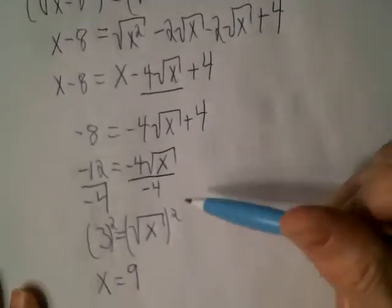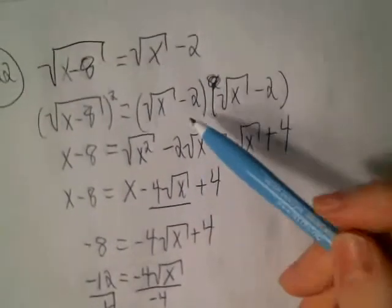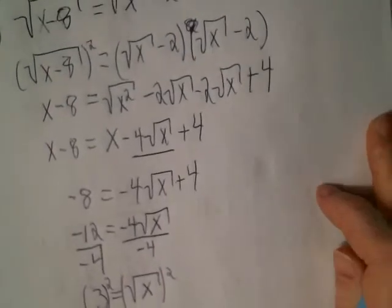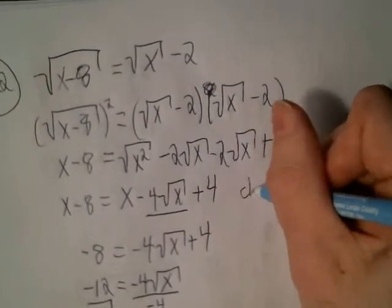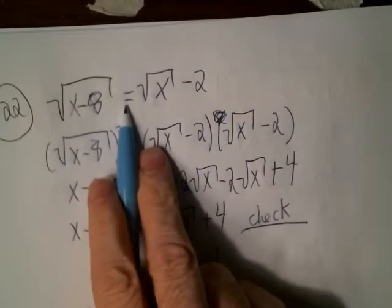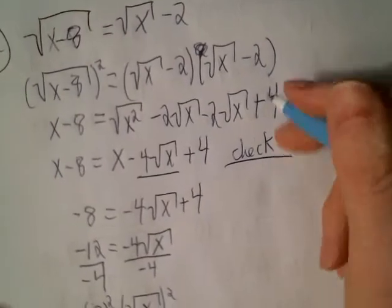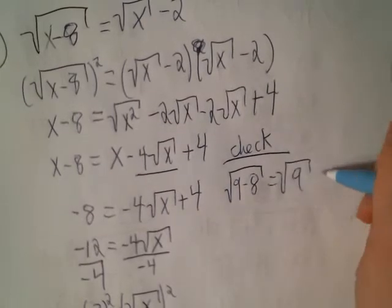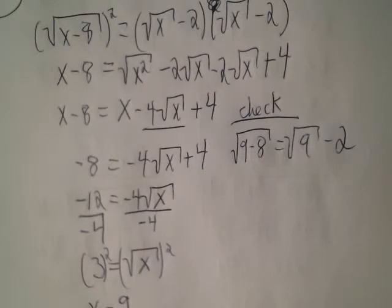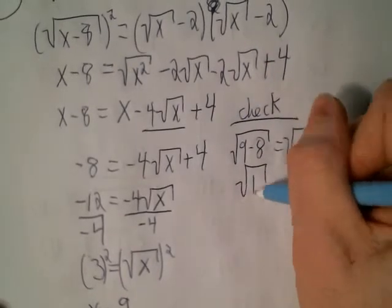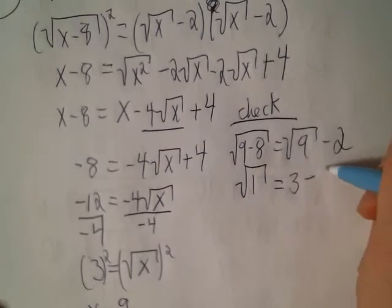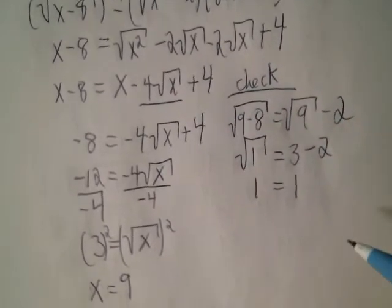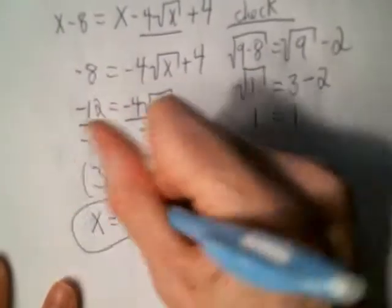We ended up having to square both sides multiple times, so we definitely need to check. Check where x is 9 — go back to the original equation. Square root of 9 minus 8 equals square root of 9 minus 2. Square root of 1 equals square root of 9 minus 2. Square root of 1 is 1, square root of 9 is 3, and 3 minus 2 is 1. So 1 equals 1 — that's true, and x equals 9 is our solution.